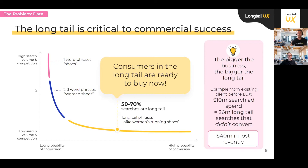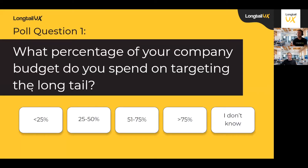We've got a poll today. The first question is: what percentage of your company's budget do you spend on targeting the long tail? Is it less than 25%, 20 to 50%, 50 to 75%, more than 75%, or you just don't know? There's also a Q&A button at the bottom if you want to ask questions specific to yourself — we'll be happy to answer anything throughout the presentation.